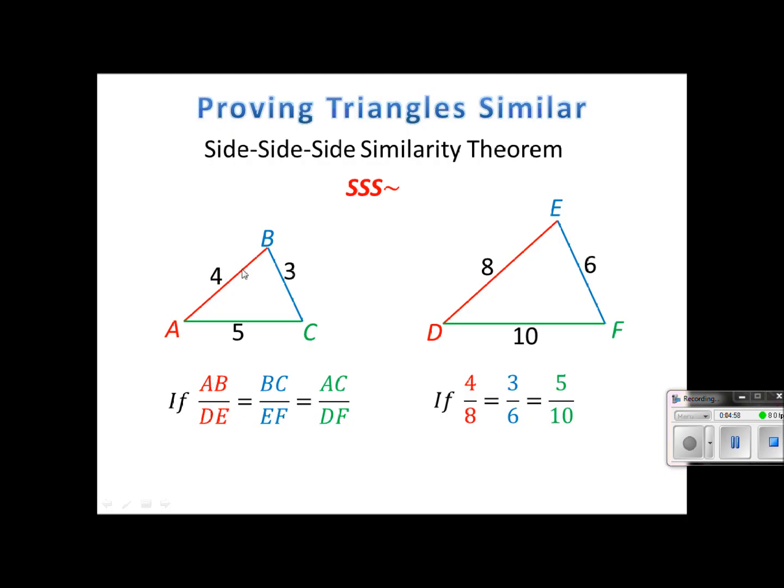So looking at the red sides because those correspond with each other, setting them up, instead of AB I'm going to put 4. Instead of DE I'm going to put 8. So I've set this up as a fraction. And then BC is 3. EF is 6. I've set this up as a fraction. And then the 5, those with the 10. And I'm showing that right here.